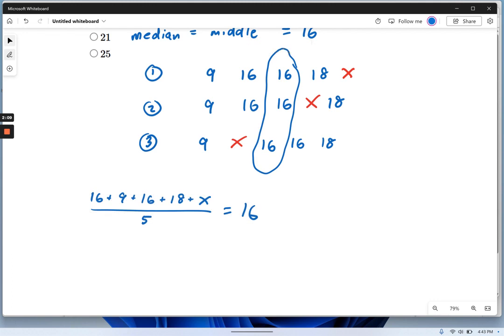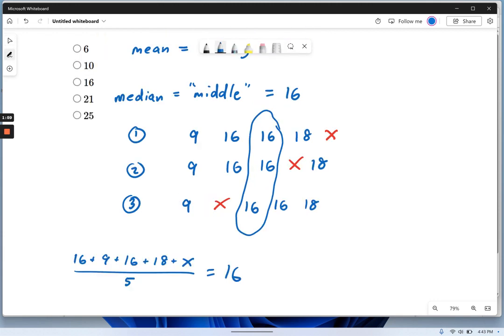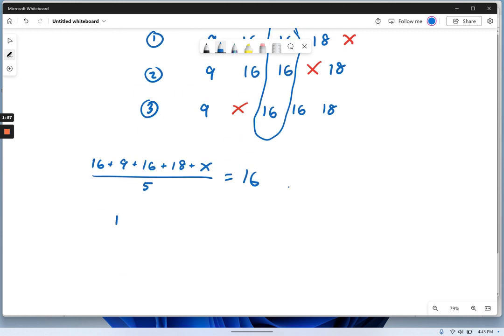So it will not be too hard. All we have to do is multiply both sides by 5. That's first. Let me get my pen back here. Give me my pen. It's a naughty program. There we go. So now we take 16 plus 9 plus 16 plus 18 plus x equals 5 times 16.